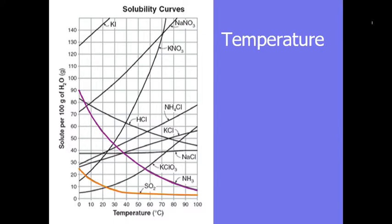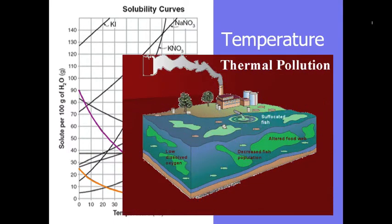This becomes one of environmentalists' key concerns when considering thermal pollution caused by natural water sources used as cooling sources for industry or power plants. Warmer water amounts to less dissolved oxygen available to aquatic life, along with some other issues.